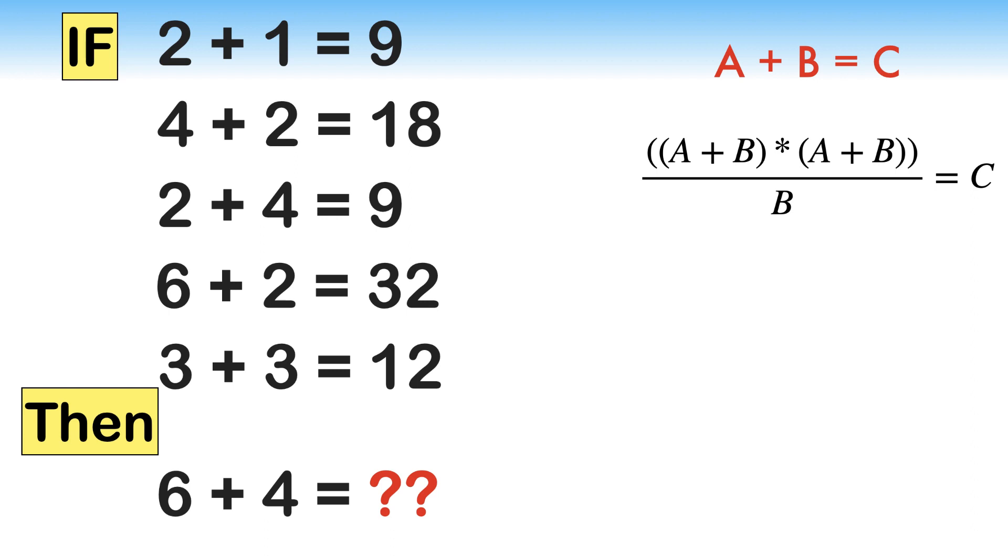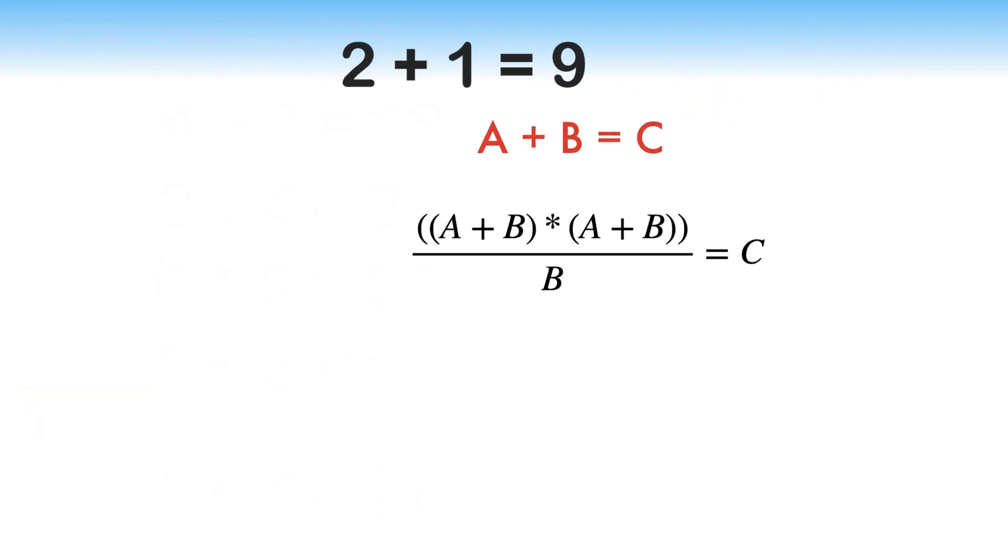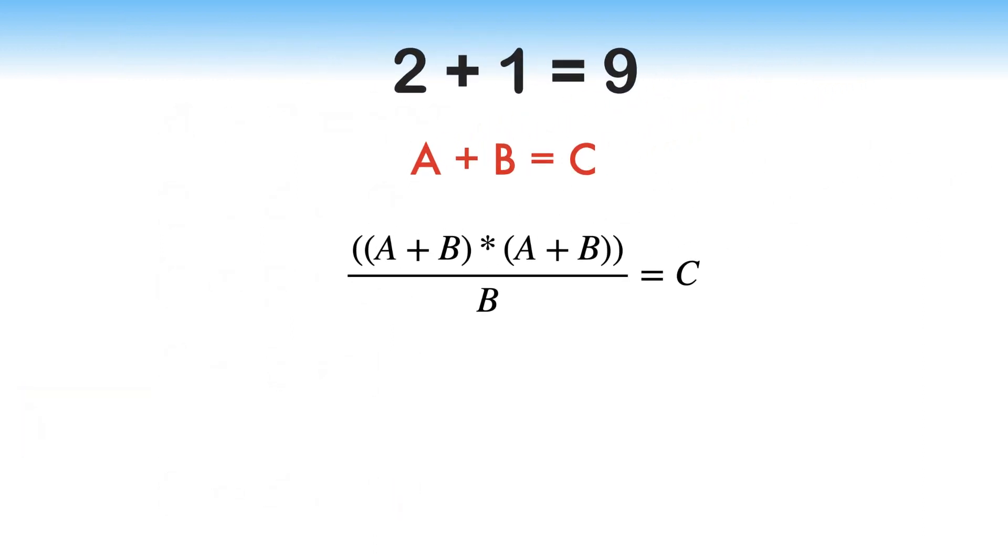Let's check whether this logic satisfies all the equations. In the first equation given, A equals 2 and B is equal to 1. After substituting the value, the equation becomes 2 plus 1 multiplied with 2 plus 1 over 1. After simplification, the equation becomes 9 over 1 which is equal to 9, which is the RHS of the equation.